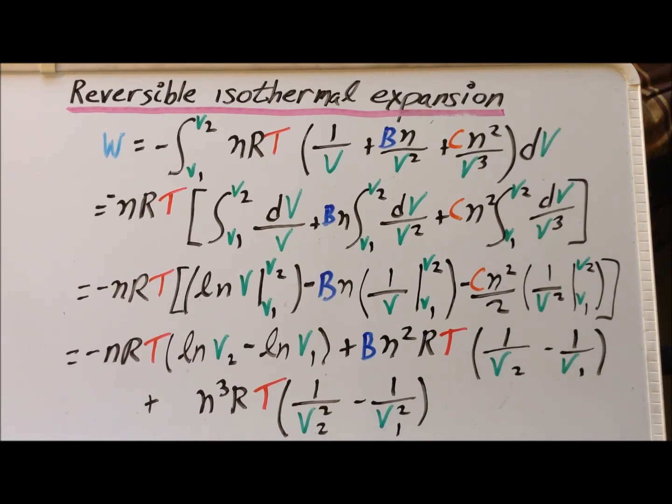One last thing to notice is that if we have a perfect gas, then for the Virial equation, the constants B and C would be identically equal to zero. So if we were trying to determine the reversible isothermal expansion work for a perfect or ideal gas, we would remove those terms and be left simply with minus nRT times natural log of V2 minus natural log of V1, which agrees with results we've already determined.